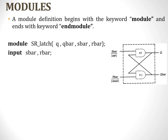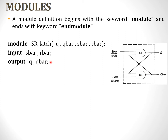Once the module declaration is done, out of this terminal list, we have to identify the input and output variables using suitable port declarations. S-bar and R-bar are the input ports; Q and Q-bar are the output ports. Inputs are declared using the keyword input, so we write: input S_bar, R_bar; ending with a semicolon. Then we declare the output variables Q and Q-bar for this SR latch module. Since we have the gate-level description, it is easy to write the gate-level code.